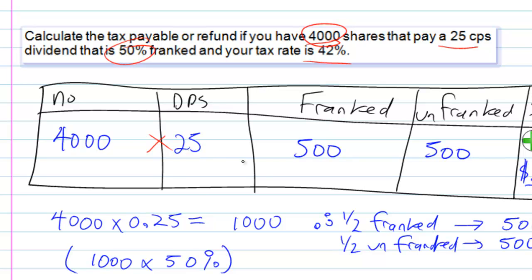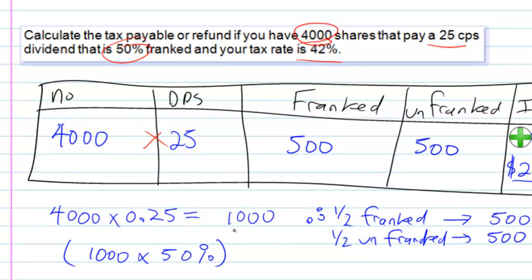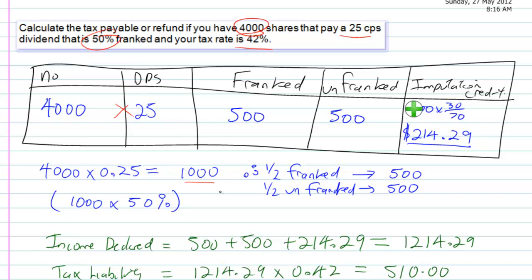That one times that one gives you a dividend per share. Now notice that that gives you a thousand, but then because it's 50% franked, half goes in here, half goes in here. So I've just done half of 500, half of 500, so a thousand times by 50%. If it's 80%, 20%, then you'd go 4,000 times 25 times 80%, and that would be on the franking, and the other bit would be on the unfranked. So that's how it works.